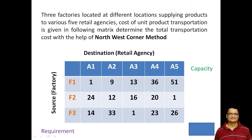The cost of unit product transportation is given in the following matrix. If from factory F1 we are transporting one unit to A1, the cost is 1. Similarly, if we are transporting from factory F1 one unit to A2, the cost of transportation per unit is 9. All these costs for various combinations are given in the matrix.